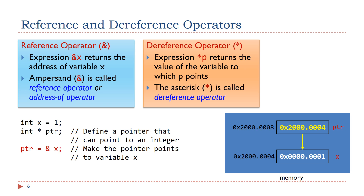We can initialize a pointer variable by using the reference operator. Specifically, we can use the reference operator to obtain the memory address of a variable and assign the address to a pointer variable. This statement assigns the memory address of variable x to the pointer variable ptr. As you can see, the 32-bit value 0x2000004 in hex is stored at memory location 0x2000008. This value is the memory address of variable x. As a result, ptr points to x. The reference operator generates a pointer that points to a variable.